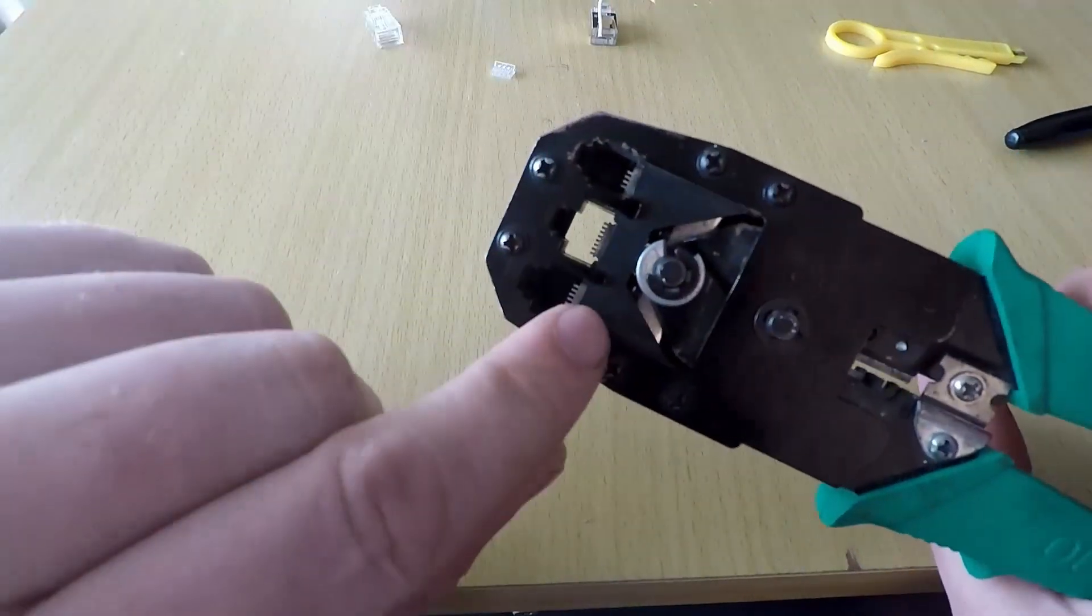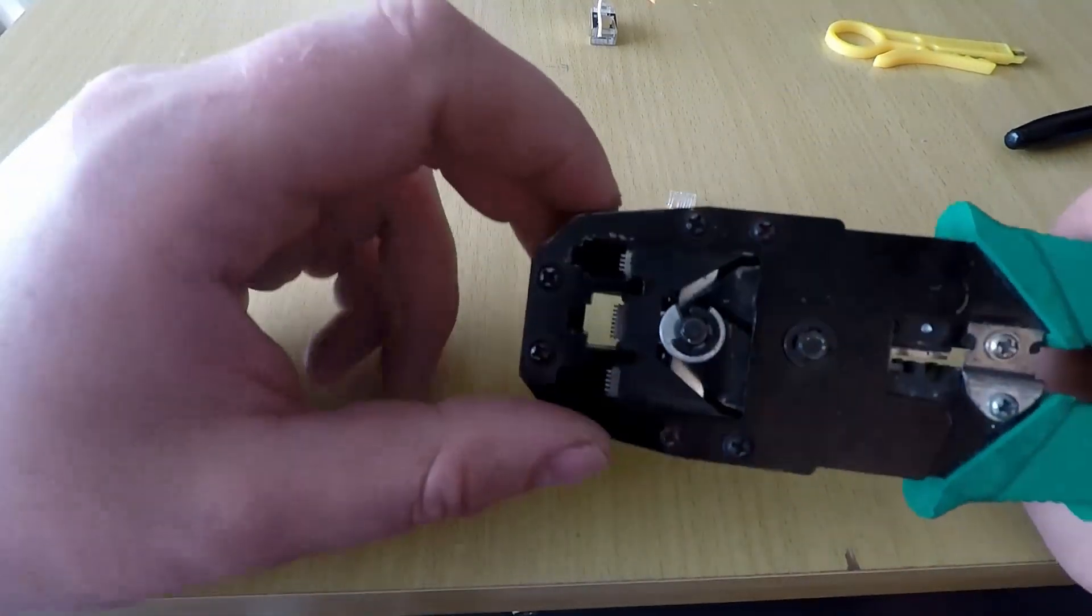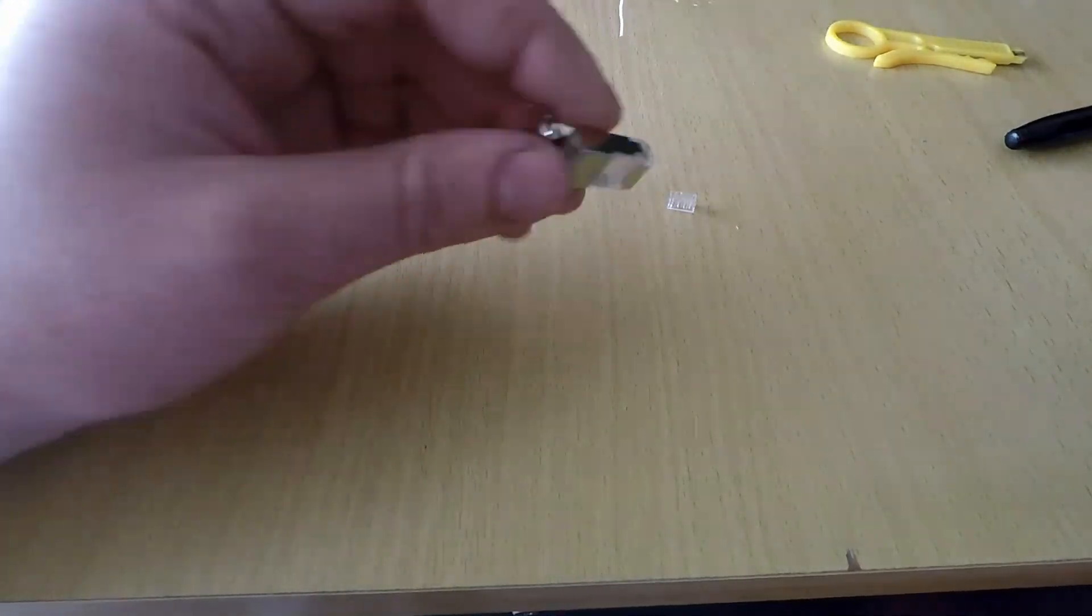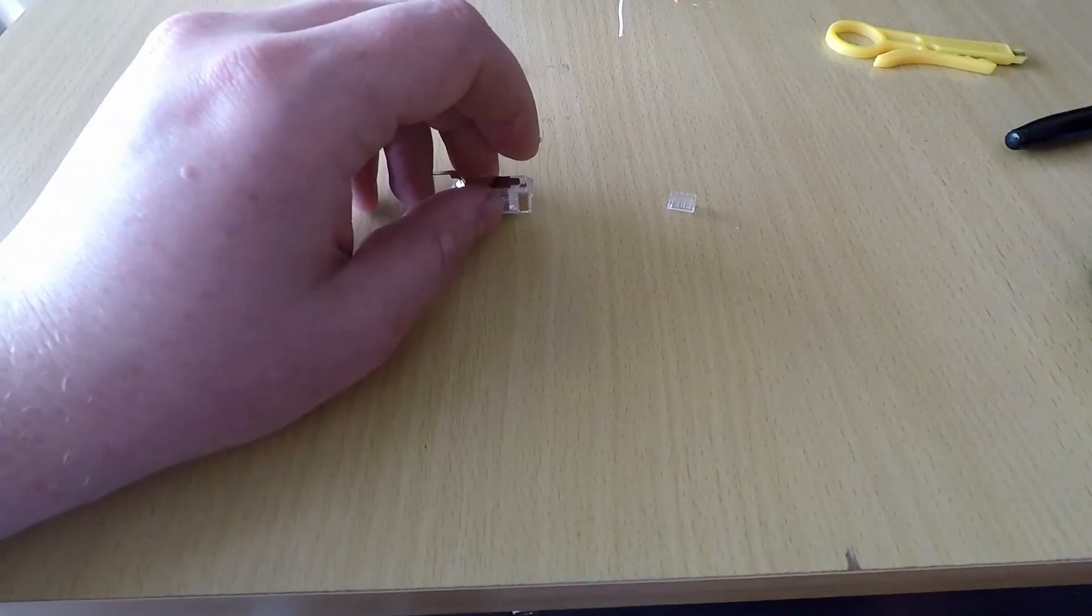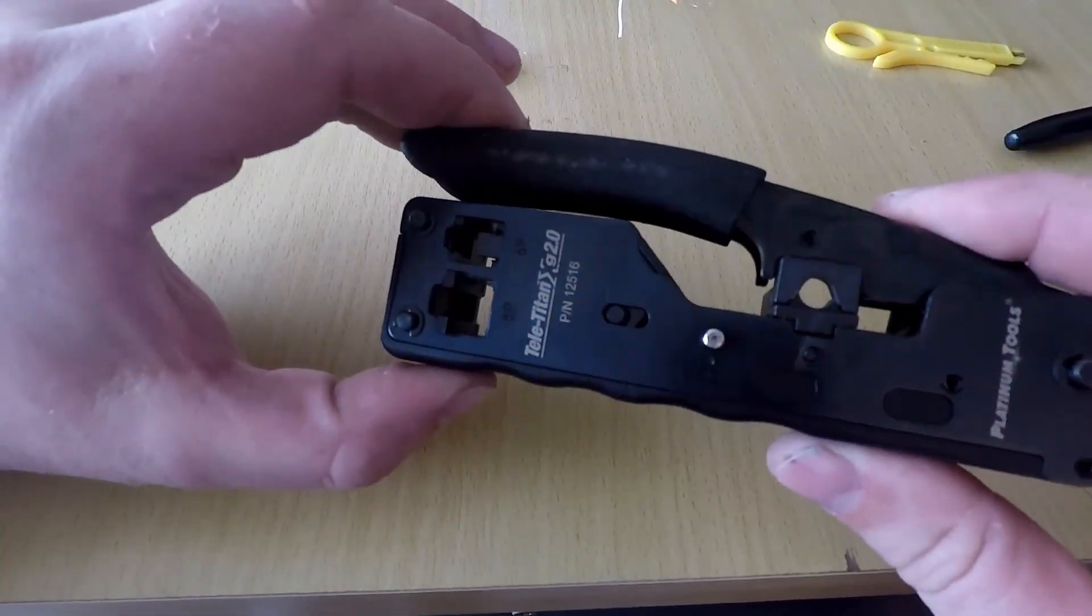So what you will need to go and do is invest in a proper CAT 6A crimping tool.